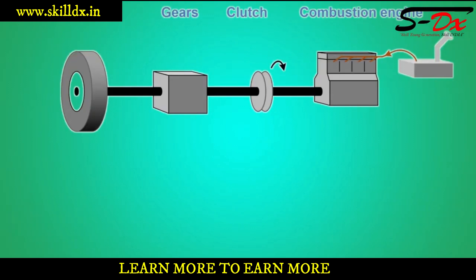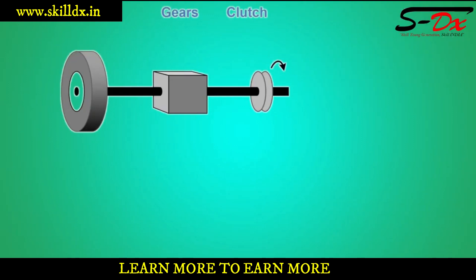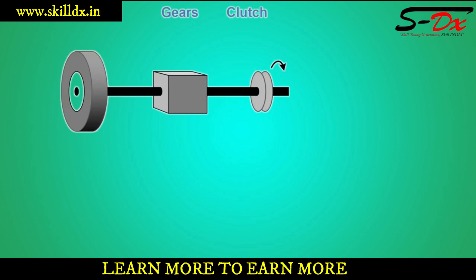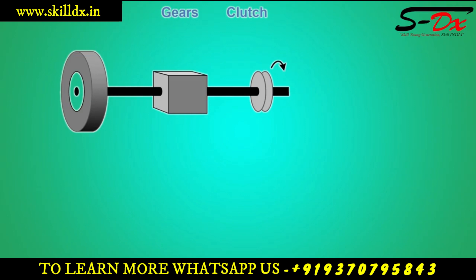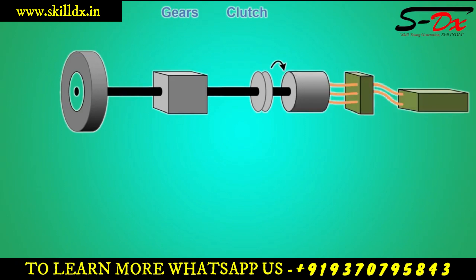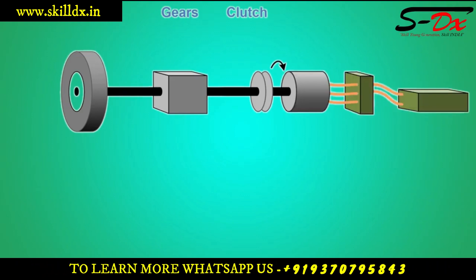This is the principle layout of the combustion engine powertrain. To get a battery electric powertrain, we start by getting rid of the combustion engine and the fuel tank, and then replace them with the battery.